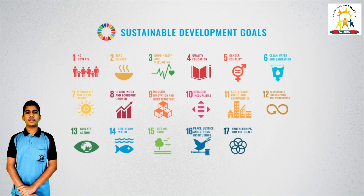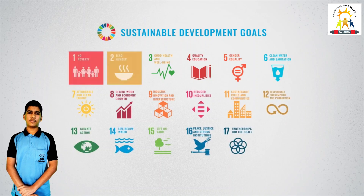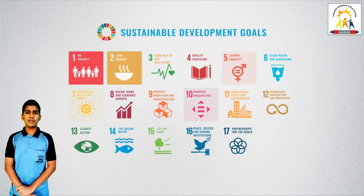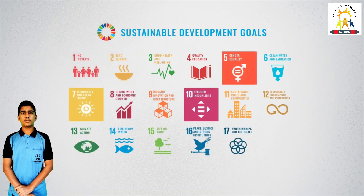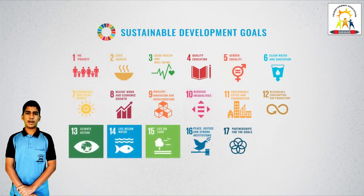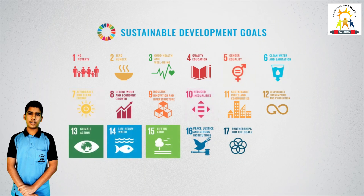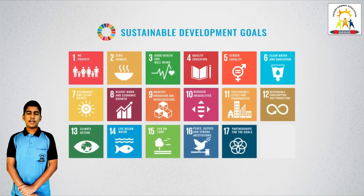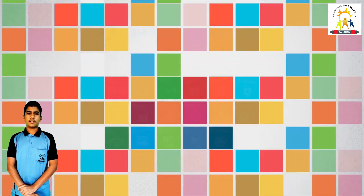The General Assembly is the largest organ of the UNO. All 193 members of the UNO are part of the General Assembly. It is also known as the World Parliament.